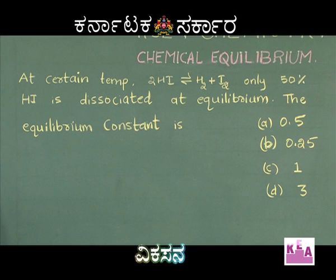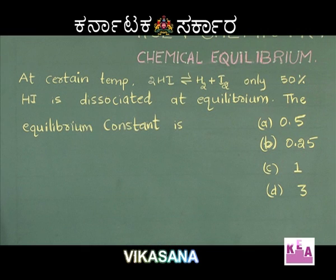The equilibrium constant is: option A, 0.5; option B, 0.25; option C, 1; and option D, 3.